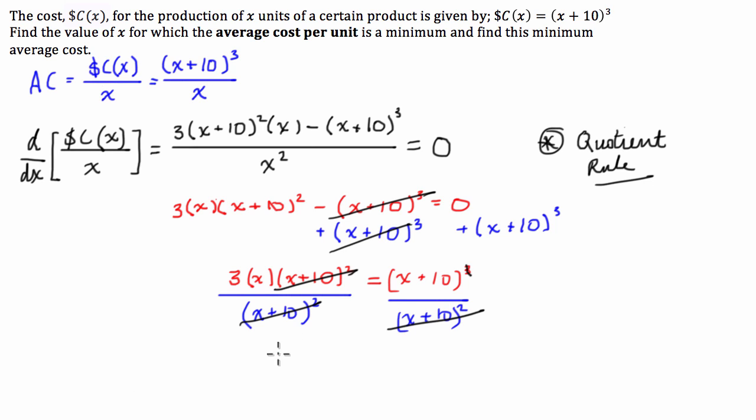Cool, so what have we actually even got remaining now, so we've got 3x is equal to, so I'm going to take the x over to the other side, which will leave 2x, then dividing by 2 will make x equal to 5. Cool. So, that is the value of x for which the average cost per unit is a minimum, but now we have to find this minimum average cost.